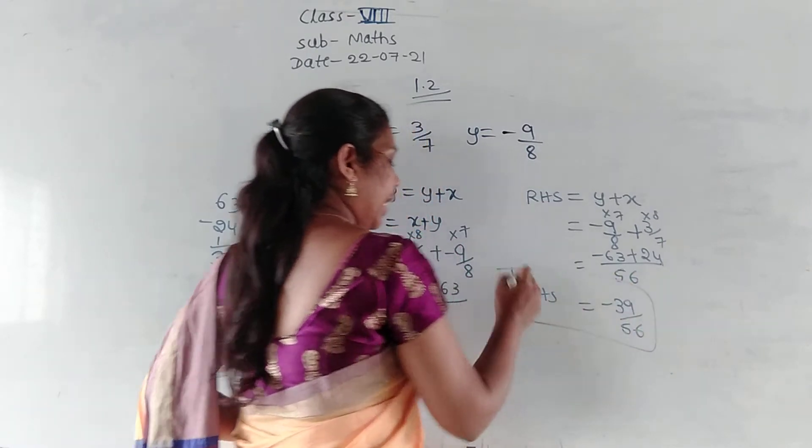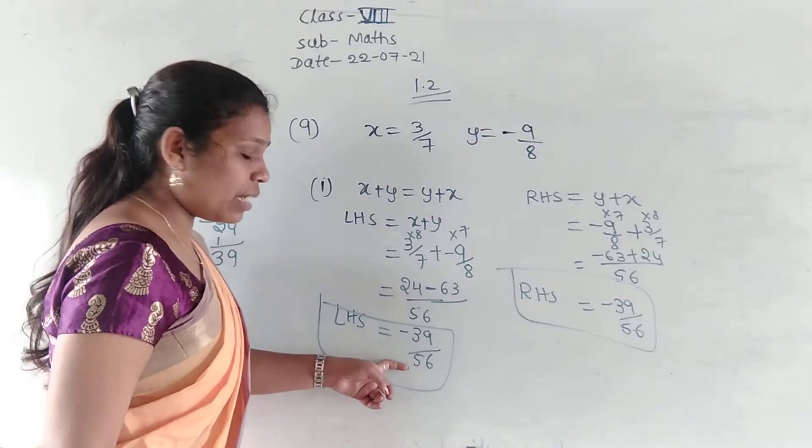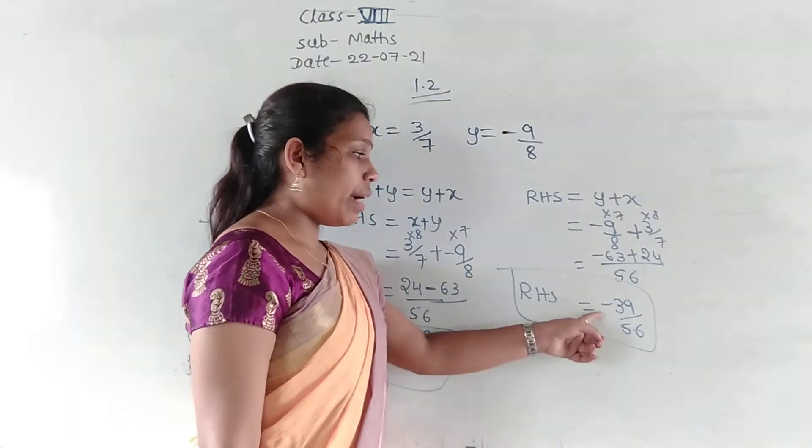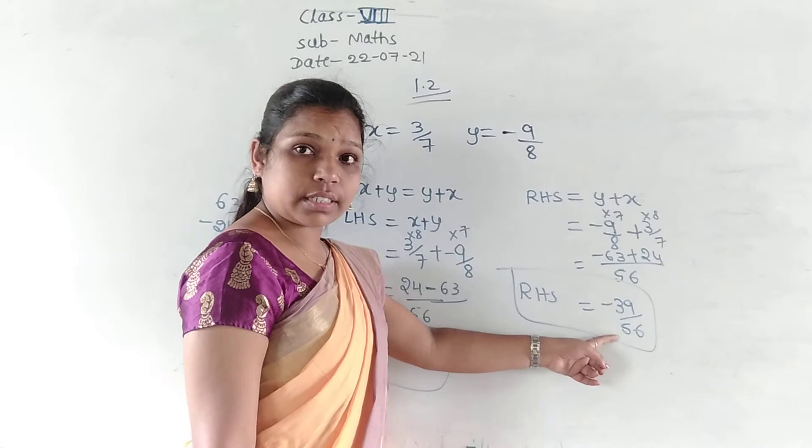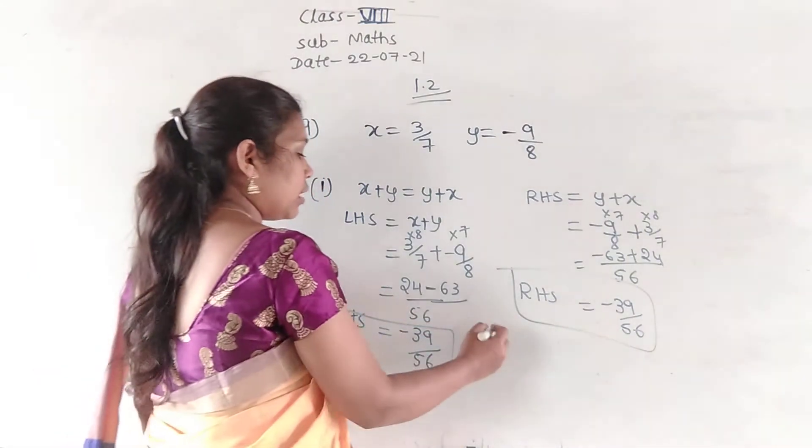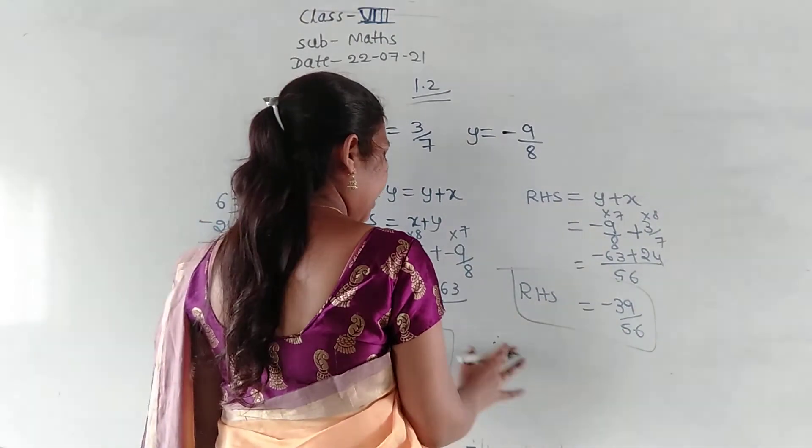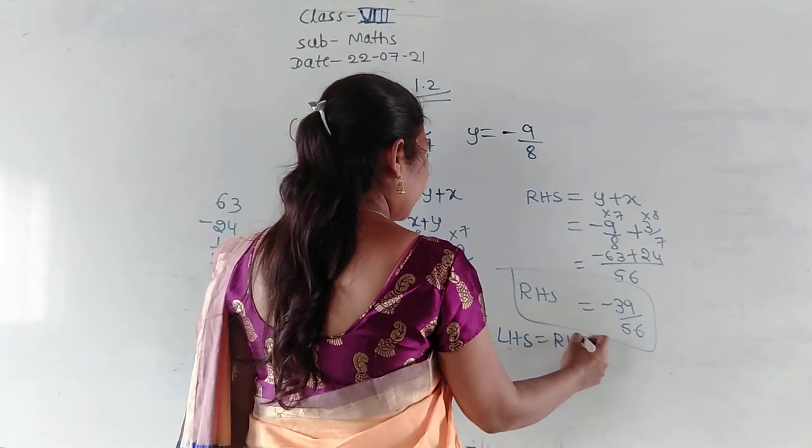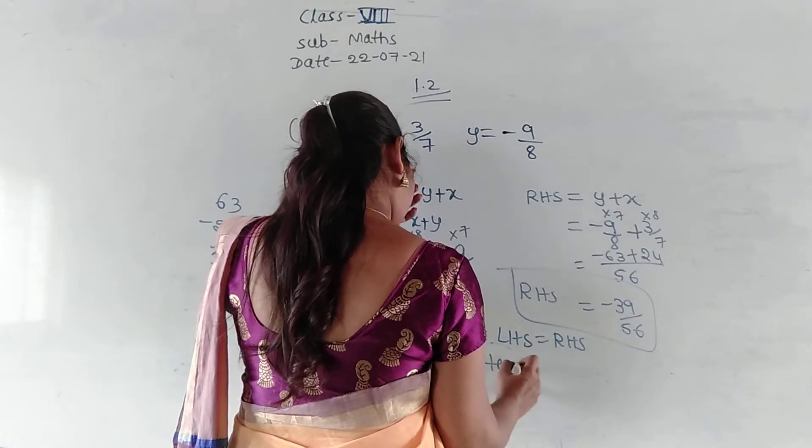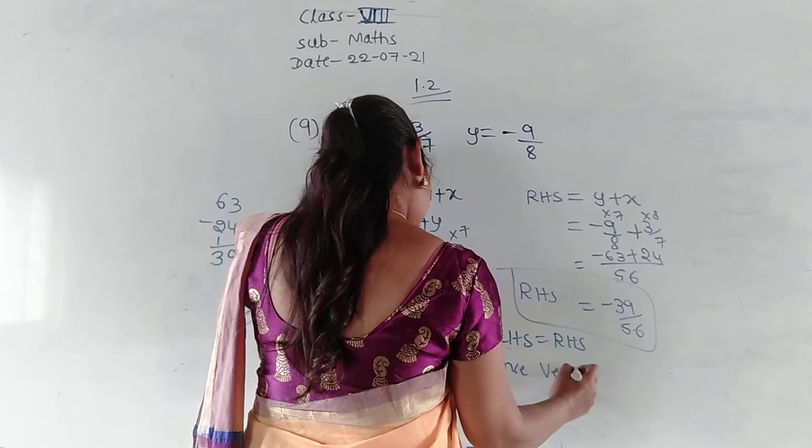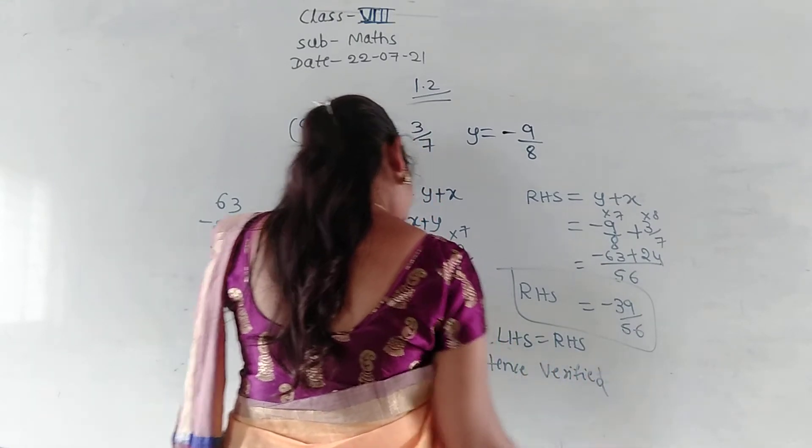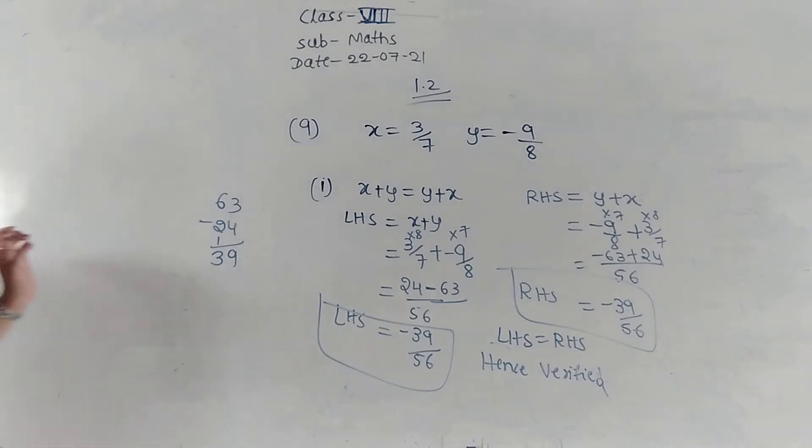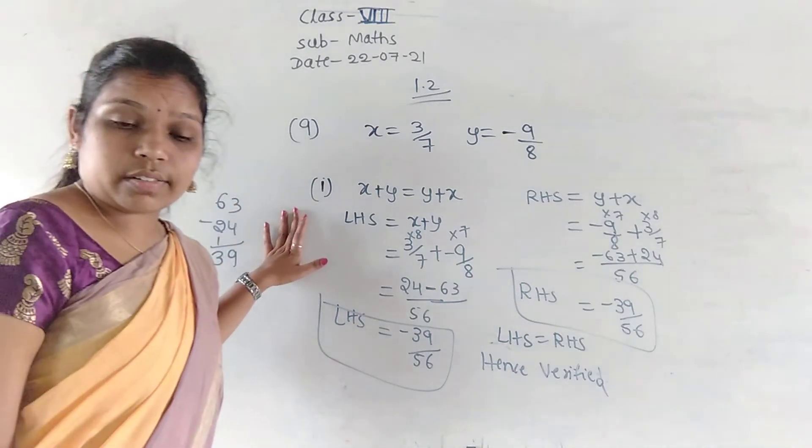So, what we got here? LHS is also minus 39 by 56. And RHS is also minus 39 by 56. So, what we can say here? Write here. LHS is equal to RHS. Hence, verified. Hope everyone understood this.